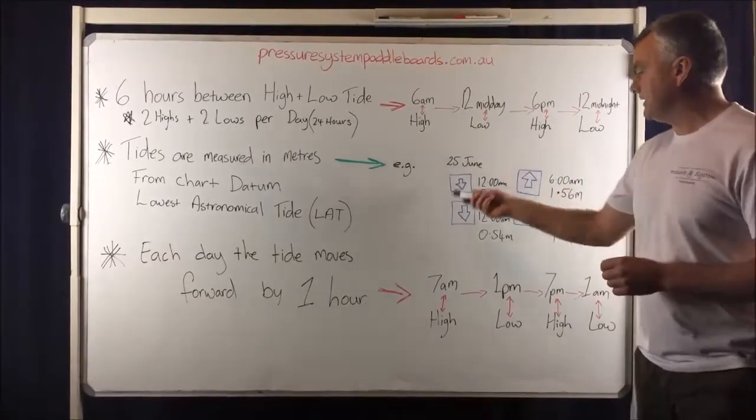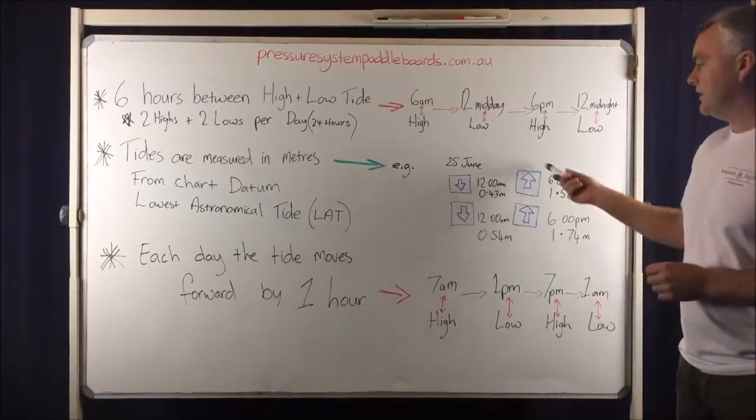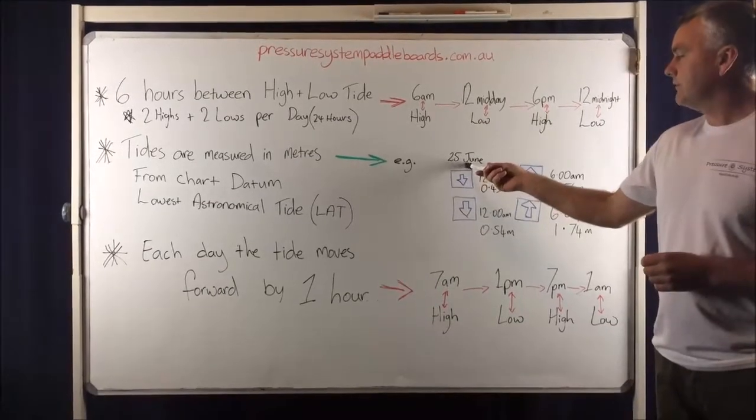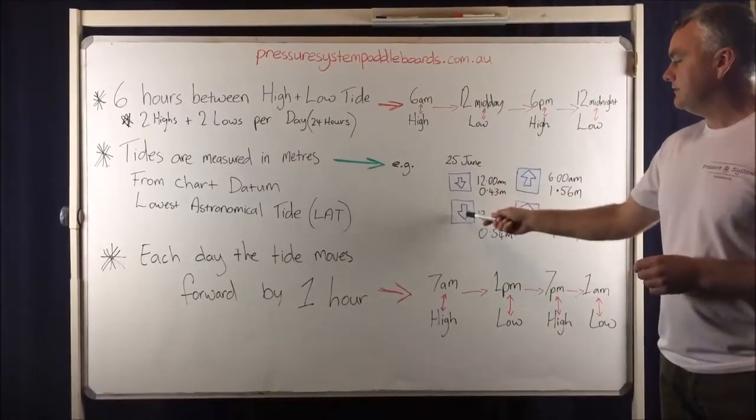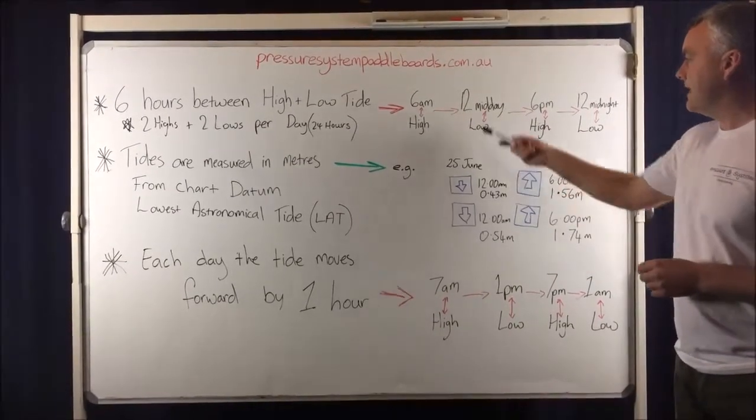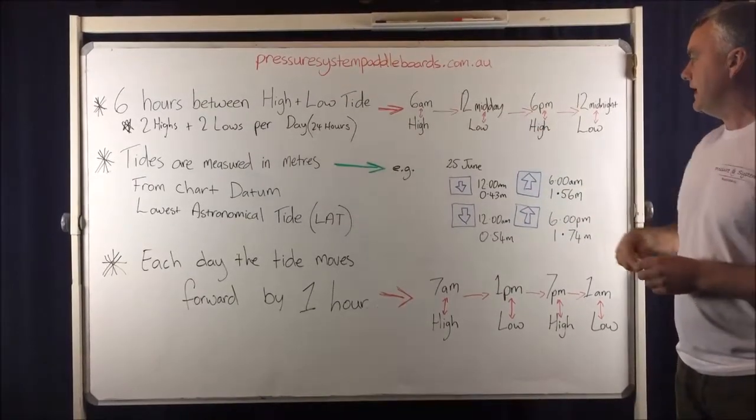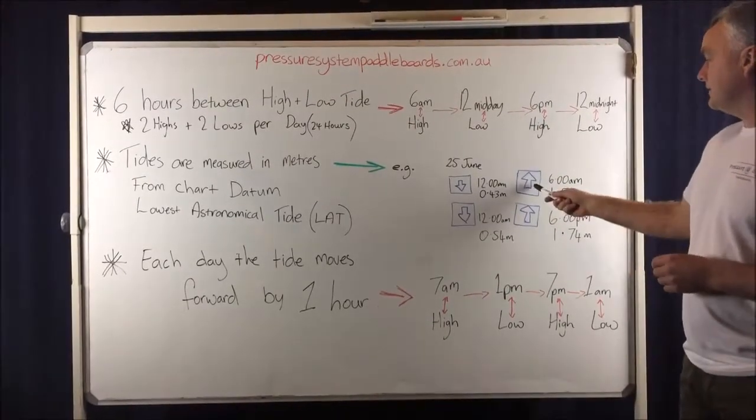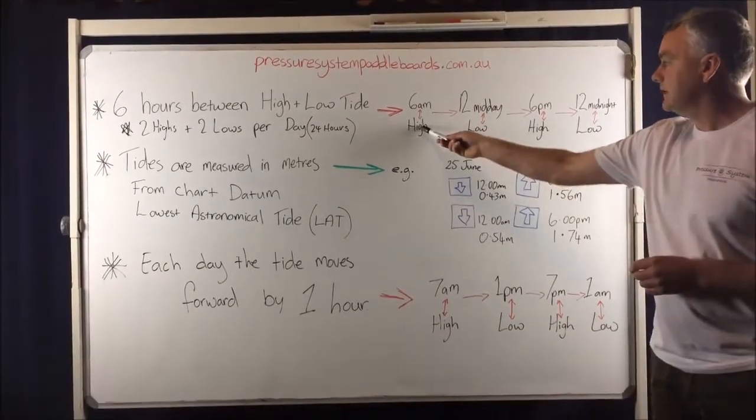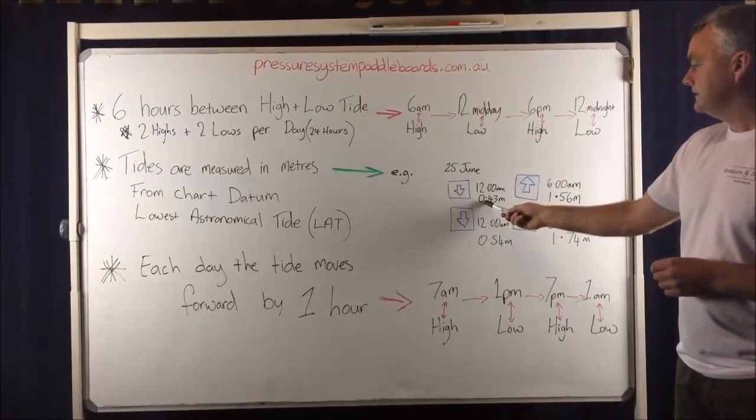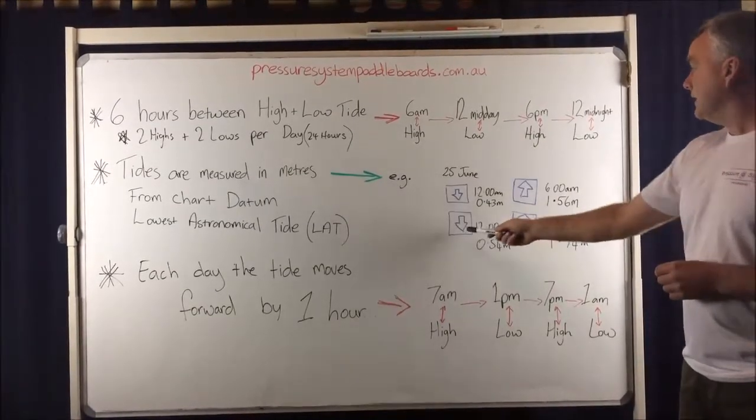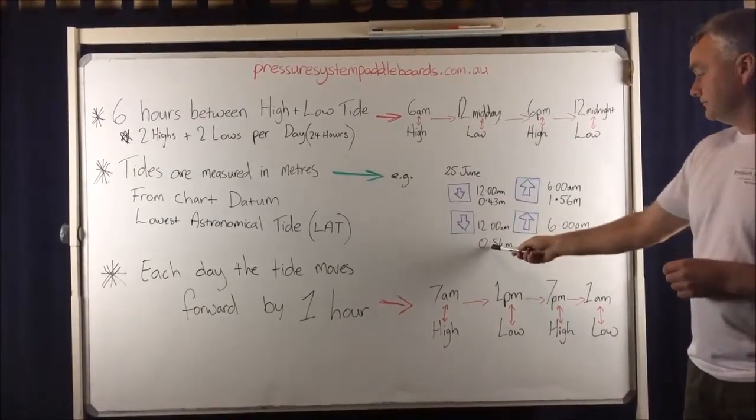On that site they'll have tide charts as well for every day of the year. And what you're likely to find is something like this. And this is pretty well exactly what you'll see on willyweather.com.au. You'll have the day's date to give you a reference of where we're looking at. These arrows here signify low tides. And the arrow pointing up obviously signifies high tides. Now I've tried to match this to this little diagram here. High tide here. The first one's at 6am and it's 1.56 metres. Low tide at 12 midday is 0.43. High tide at 6pm is 1.74. And low tide at 12 midnight is 0.54 metres.